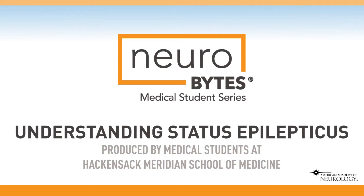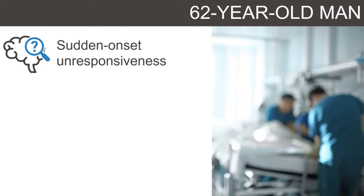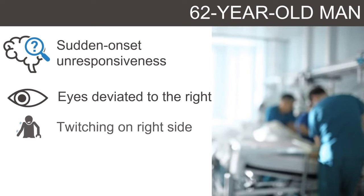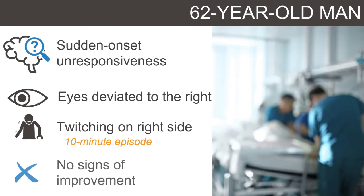Understanding Status Epilepticus. You are on your ED shift when a 62-year-old man arrives for reported sudden-onset unresponsiveness. You are unable to obtain any medical history, and upon further physical exam, you notice that his eyes are open and deviated to the right, and there is subtle twitching of the right side of his face and right arm. The patient has reportedly been like this for 10 minutes and is showing no signs of improvement. Could this be Status Epilepticus?